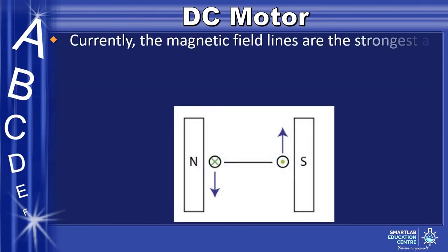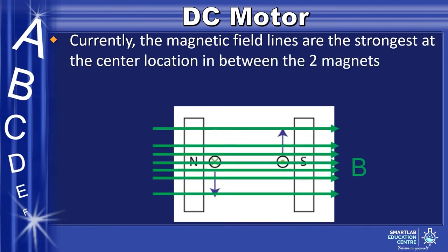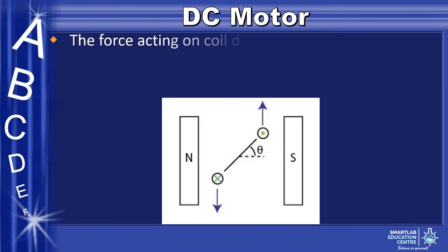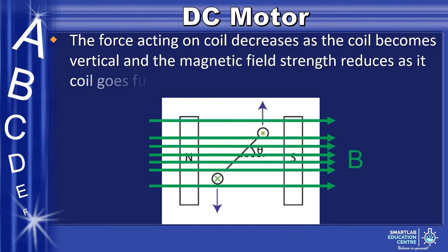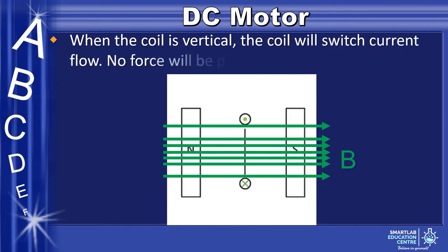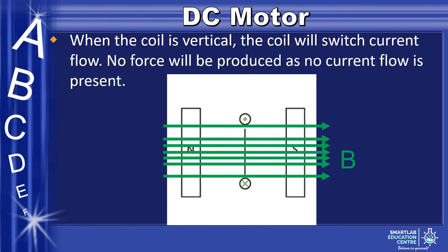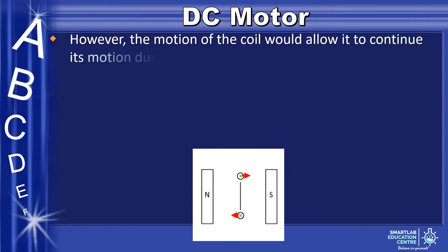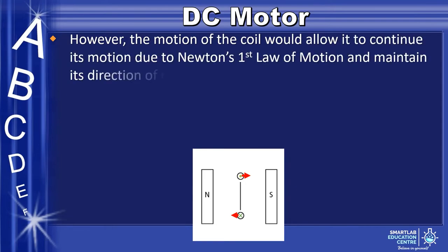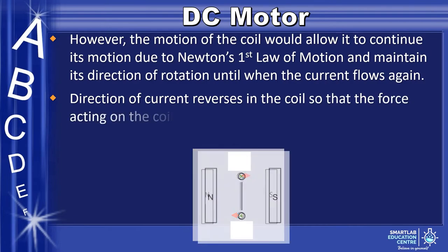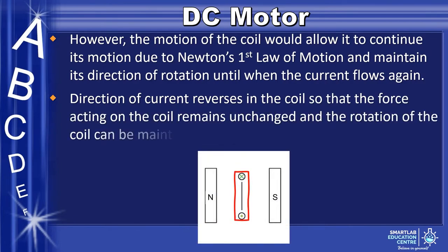The coil and axle move due to the force acting on them, creating a turning effect to rotate the coil about the axle. The magnetic field is strongest at the central location between the two magnets, where the force on the coil is maximum. The force acting on the coil decreases as the coil becomes vertical, and the magnetic field strength reduces as it goes further from the center. When the coil is vertical, current flow switches and no force is produced. However, the motion of the coil allows it to continue due to Newton's first law of motion, maintaining its direction of rotation until the current flows again. The direction of current reverses in the coil so that the force remains unchanged and rotation is maintained in the same direction.